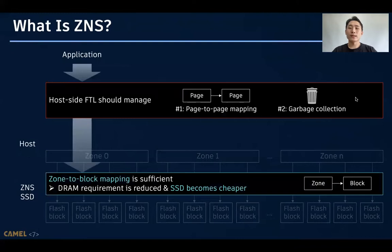The main benefit of ZNS is to make the underlying SSDs more cost-efficient. Specifically, since they are only sequential writes, zone-to-block mapping is sufficient for SSDs. Therefore, DRAM requirement is reduced, and it can make SSDs more cost-efficient. So, we can summarize the main concept of ZNS as follows.